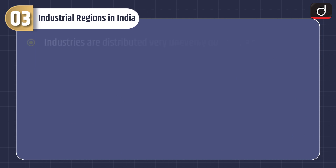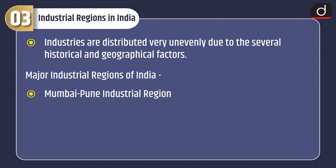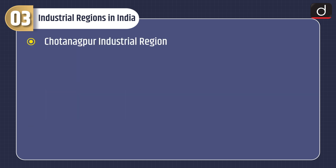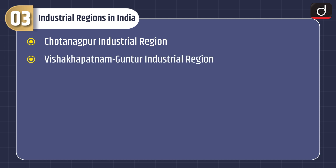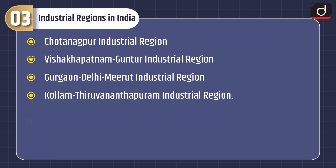Industrial regions in India: Industries are distributed very unevenly due to several historical and geographical factors. Major industrial regions of India are the Mumbai-Pune industrial region, Hooghli industrial region, Bangalore-Tamil Nadu industrial region, Gujarat industrial region, Chhota Nagpur industrial region, Vishakhapatnam-Guntur industrial region, Gurgaon-Delhi-Meerut industrial region, and Kollam-Thiruvananthapuram industrial region.